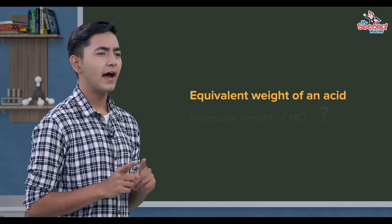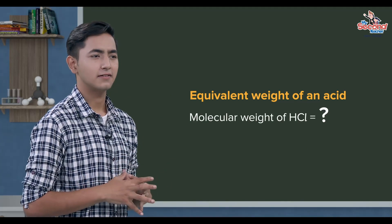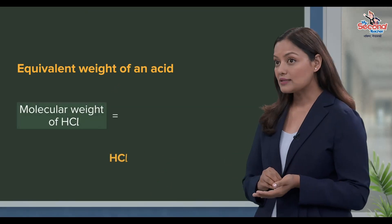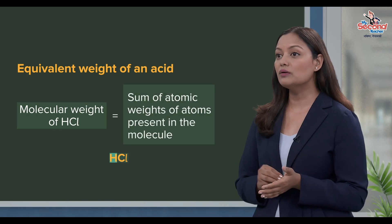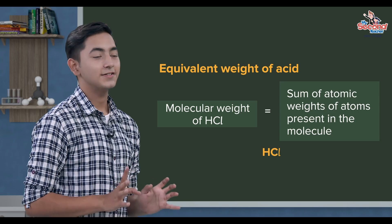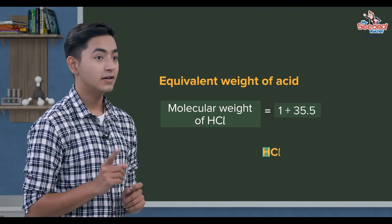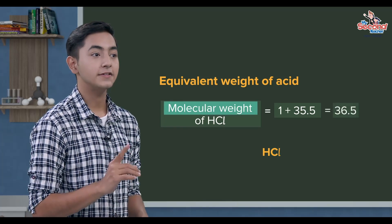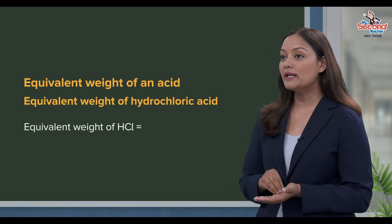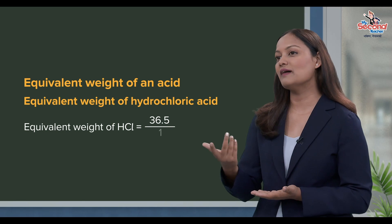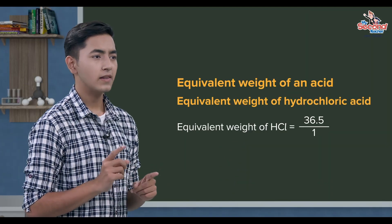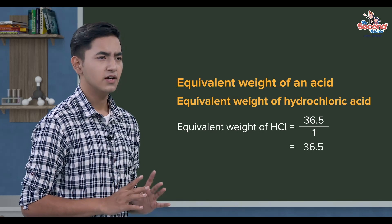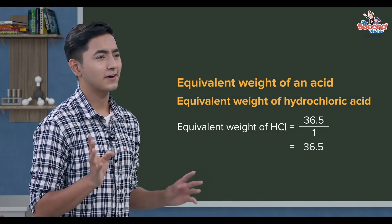Hydrochloric acid ko molecular weight nikaalna hydrogen ra chlorine ko atomic weight add garne to honni. Hydrogen ko atomic weight 1 anhi chlorine ko atomic weight 35.5 — add garda hydrochloric acid ko molecular weight 36.5 unne sa. Hydrochloric acid ko basicity 1 bhani pa chhi, eiskko equivalent weight nikaalna 36.5 lae 1 le divide garne to honni. 36.5 lae 1 le divide garda 36.5 nahi ta honni.